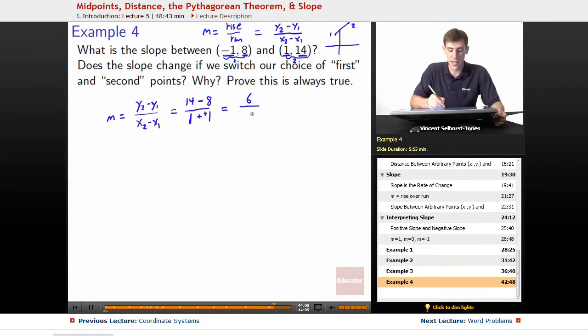1 minus negative 1, those negatives cancel, we get 6 over 2 equals 3. So our slope is 3.